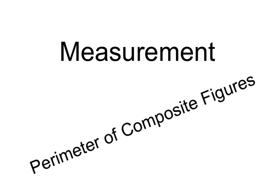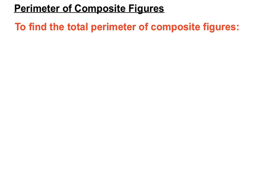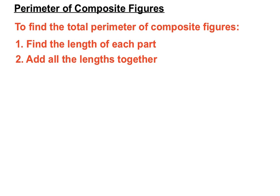Hello and welcome to a measurement video on the Perimeter of Composite Figures. Composite figures are figures that are made up of different shapes put together. To find the total perimeter of composite figures, we number one find the length of each part, and then we add up all the lengths together.